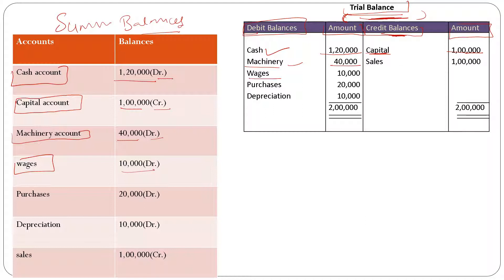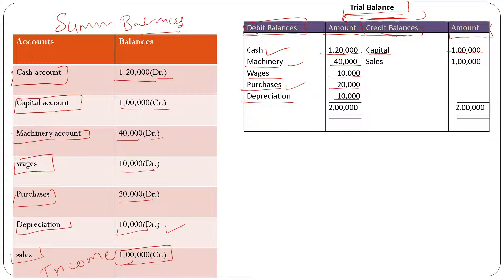Machinery goes on the debit side — ten thousand rupees. Purchases have a debit balance of twenty thousand rupees, so purchases go on the debit side. Depreciation is an expense, so it is shown on the debit side — ten thousand rupees. Sales are income to the business, so sales are shown on the credit side — one lakh rupees. We are now done preparing the trial balance.